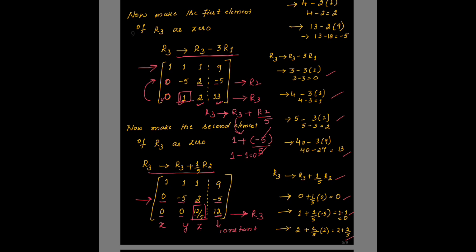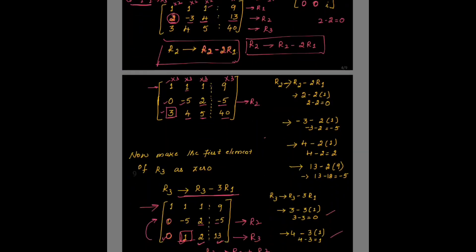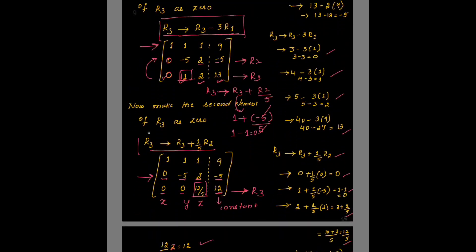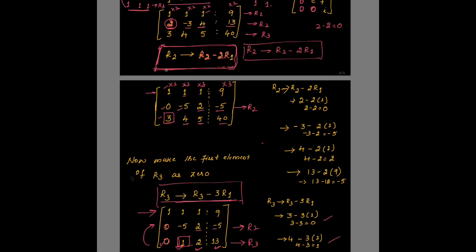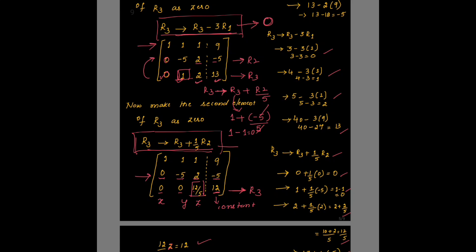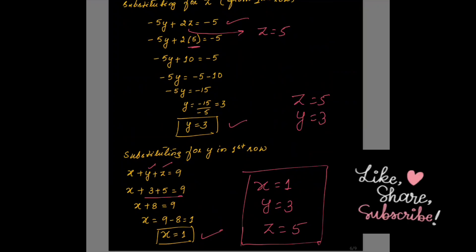This is how you use row operations in the Gauss elimination method to find values for variables x, y, z — the elements below the diagonal must be made zero, so select row operations appropriately. The three row operations used were: R2 = R2 minus 2×R1 (zeroing the first element of R2), R3 = R3 minus 3×R1 (zeroing the first element of R3), and R3 = R3 plus (1/5)×R2 (zeroing the second element of R3). Hope you find this session useful. Please like, share, and subscribe. Thank you, bye-bye and take care.